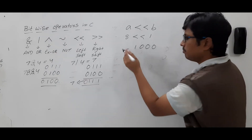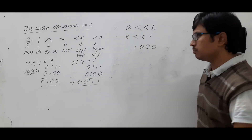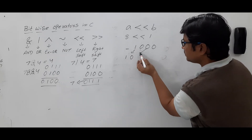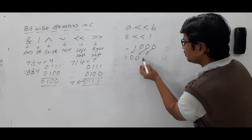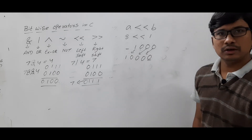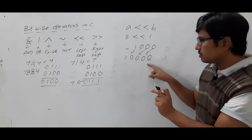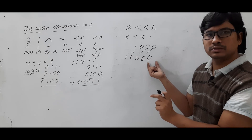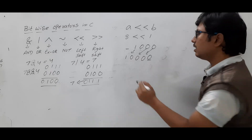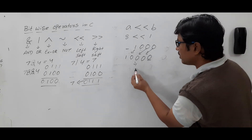After left shifting 8 by 1 bit, the result is 10000. Converting this binary number to decimal gives 16. To make it clearer, let me do another example: 4 left shift 2. I will perform two successive left shifts of 1 bit each.